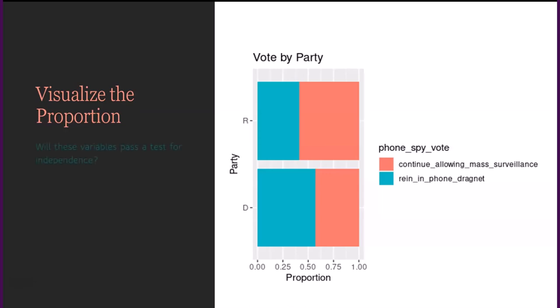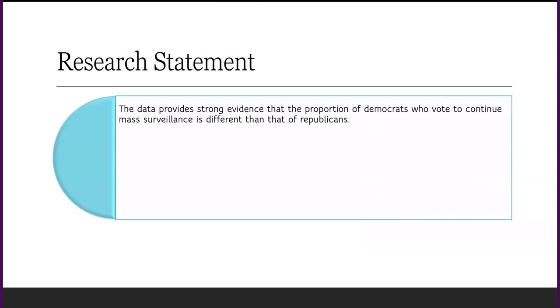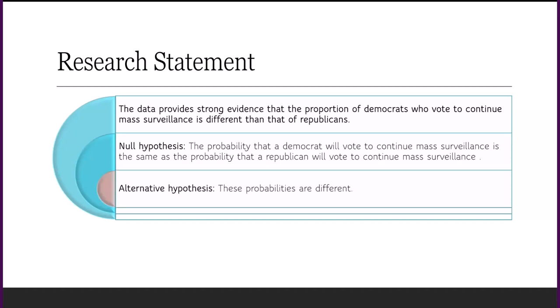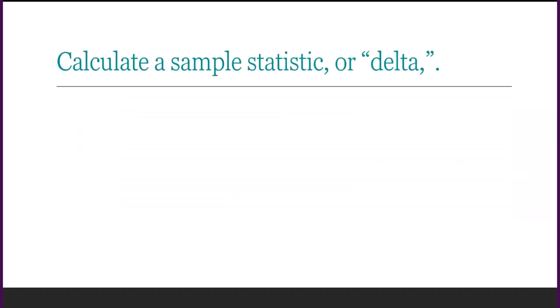My research statement is: the data provides strong evidence that the proportion of Democrats who vote to continue mass surveillance is different than that of Republicans. The null hypothesis is that the probability that a Democrat will vote to continue mass surveillance is the same as the probability that a Republican will vote to continue mass surveillance. The alternative hypothesis is that these probabilities are different.